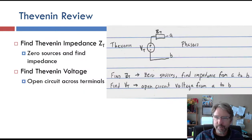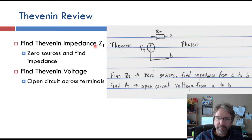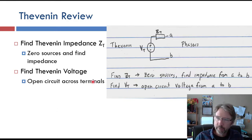Now we'll spend time on Thevenin equivalent circuits, because it's going to keep coming up. Thevenin is where you replace any circuit with two terminals with a voltage source and an impedance — originally a resistor, but now an impedance. The Thevenin process works exactly the same with phasors. It's a two-step process: first find ZT, the Thevenin impedance, by zeroing all the sources and finding the equivalent impedance; then find the Thevenin voltage, which is the open circuit voltage across the terminals with the load removed.